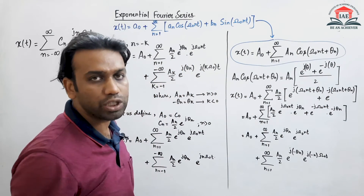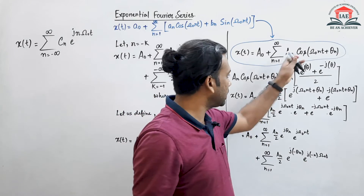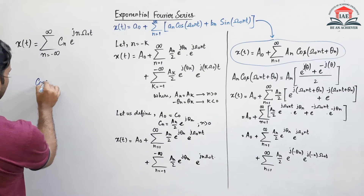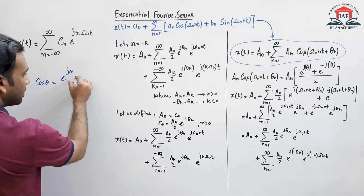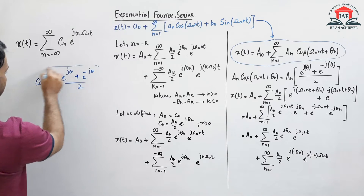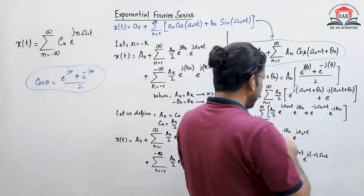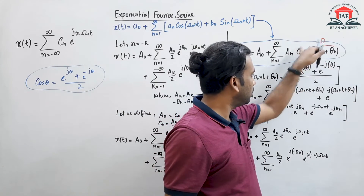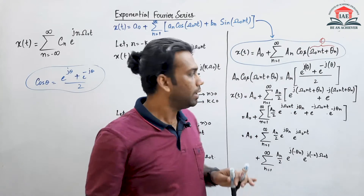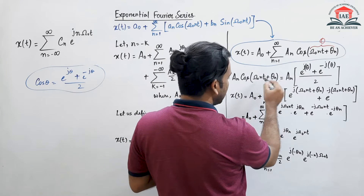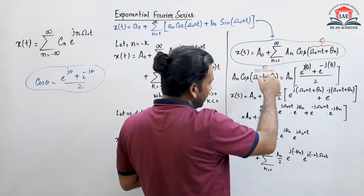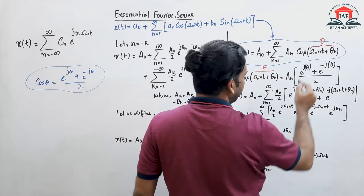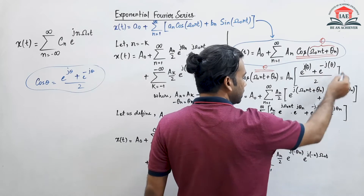Now, this cosine Fourier series uses the exponential formula. The exponential formula is: cos(theta) equals e^(j·theta) plus e^(-j·theta) divided by 2. We will use this formula. So theta here is [n·omega_0·t + theta_n], and we have to break this cos(theta) into this exponential formula. So An·cos(n·omega_0·t + theta_n) will be replaced by this exponential expression.